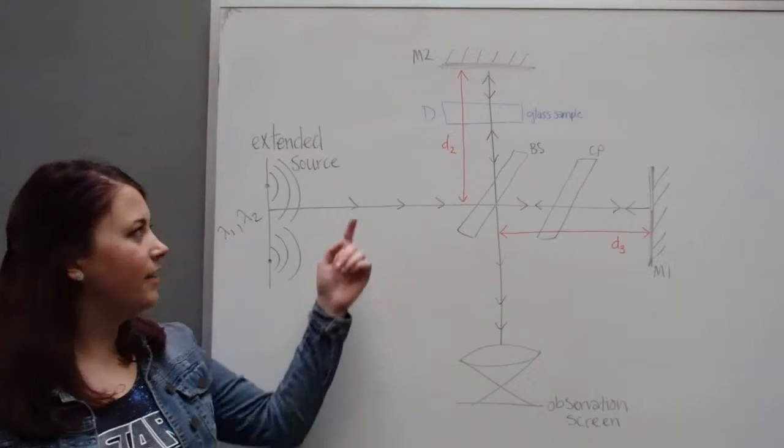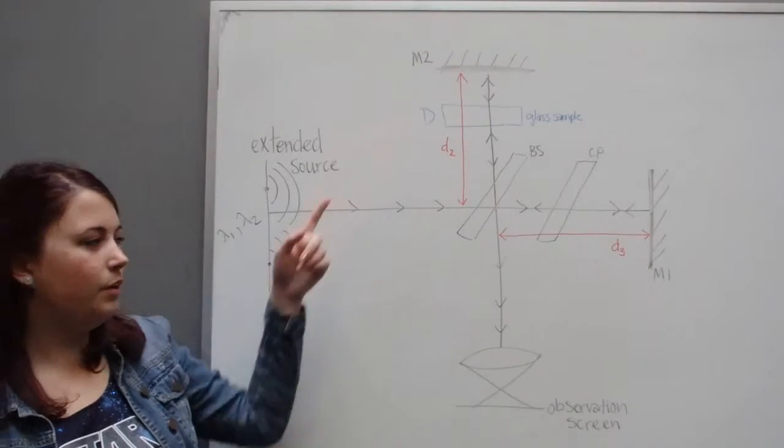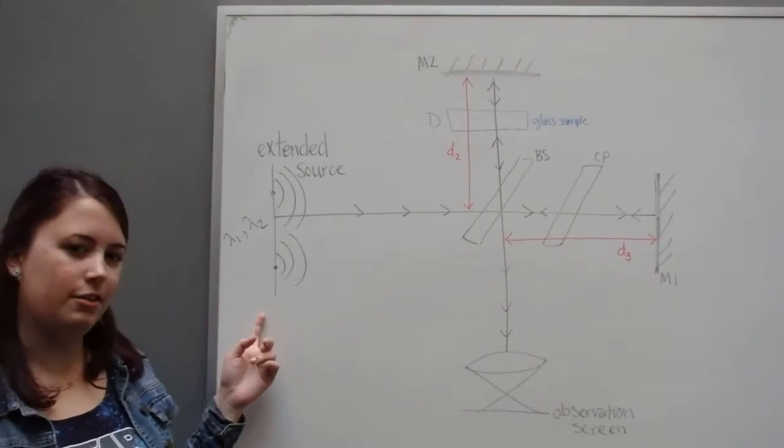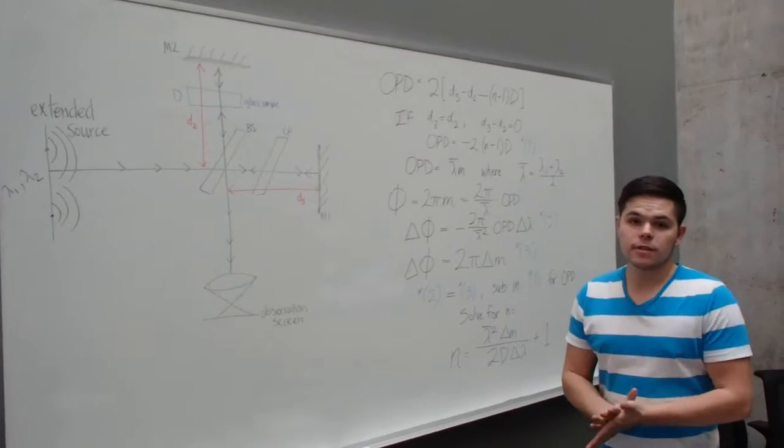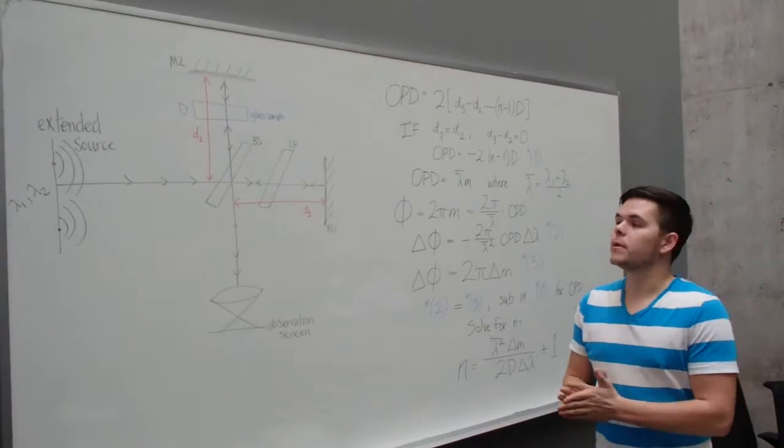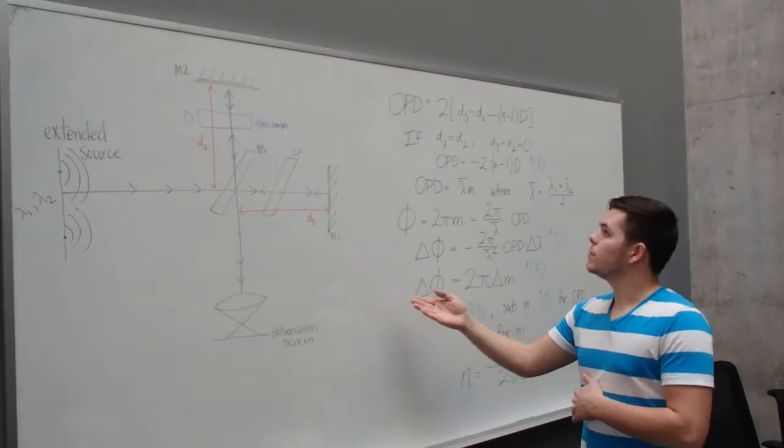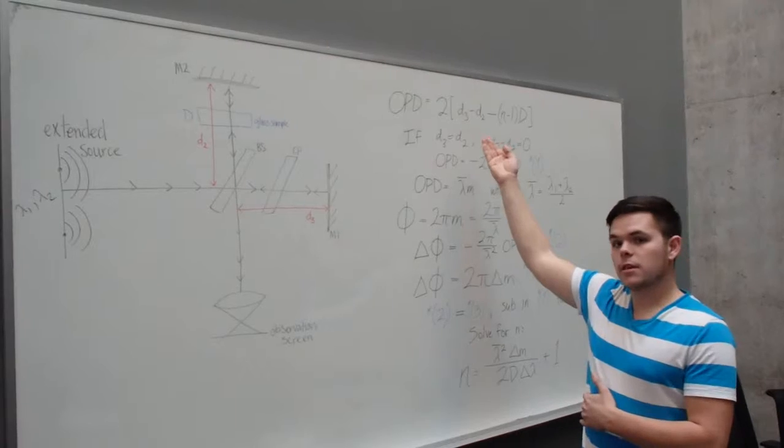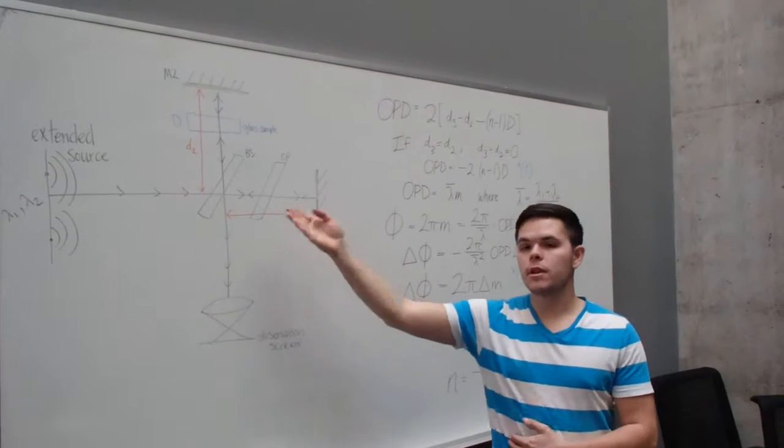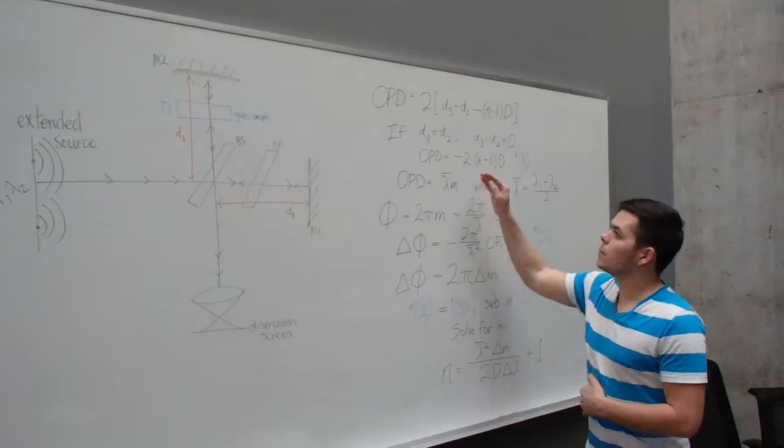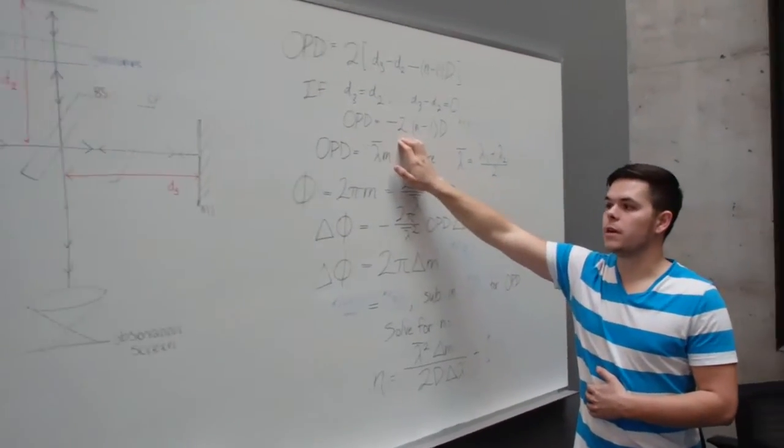The purpose of our experiment was to find the index of refraction of our sample using the Michelson interferometer by changing the source wavelength. This is the derivation for the equation that drives our experiment. Starting with the regular Michelson interferometer and the equation that is the optical path difference for it, you can set the distances d3 and d2 equal to one another and come up with a simpler equation for OPD here.